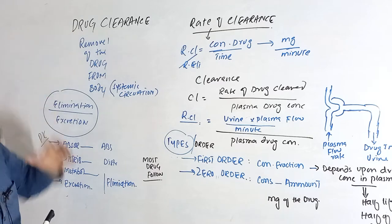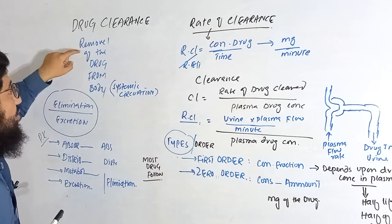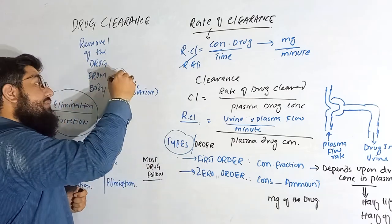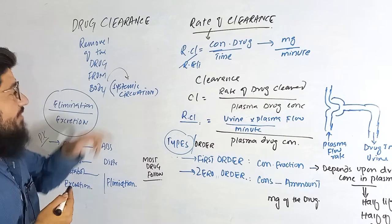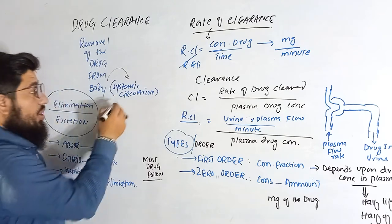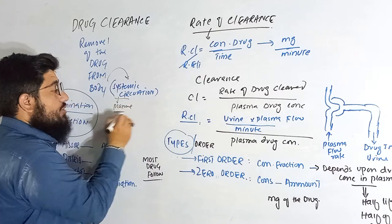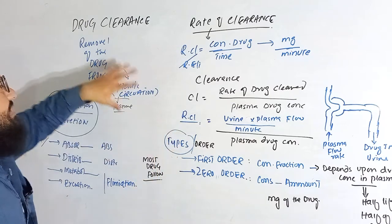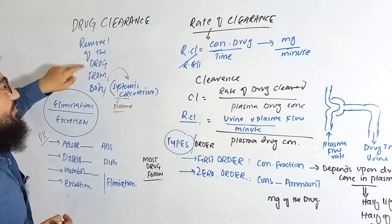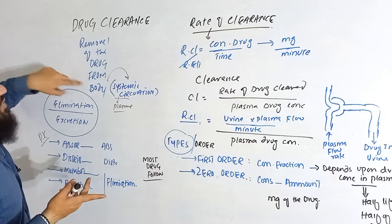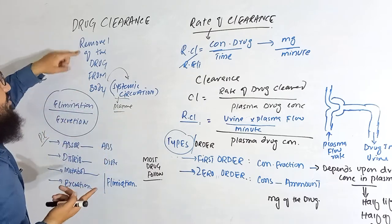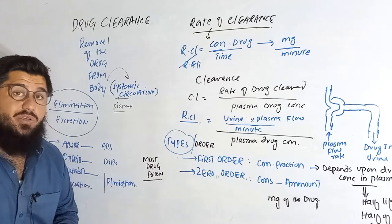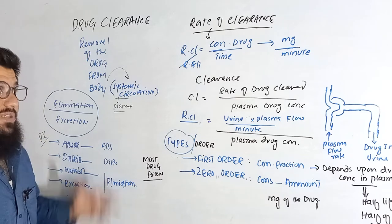What is drug clearance? Simply, it is the removal of the drug from the body — from the systemic circulation, and more specifically from the plasma. Removal of the drug from the plasma is called drug clearance. Removal of the drug from the systemic circulation is drug clearance. Removal of the drug from the body is drug clearance. These are the definitions one must know.